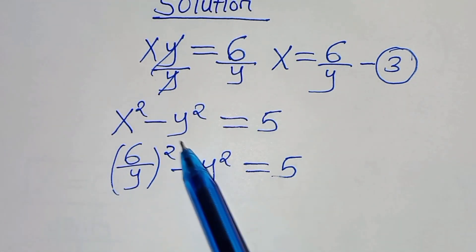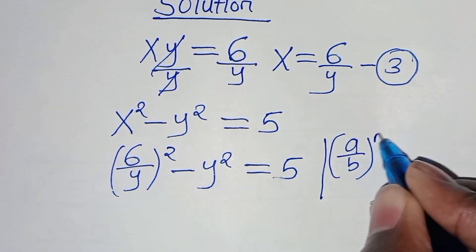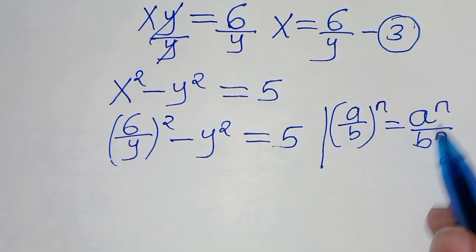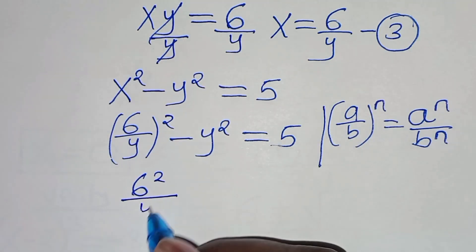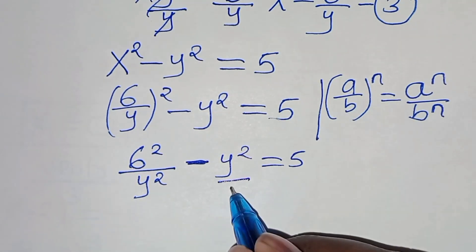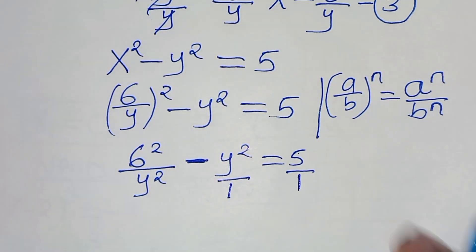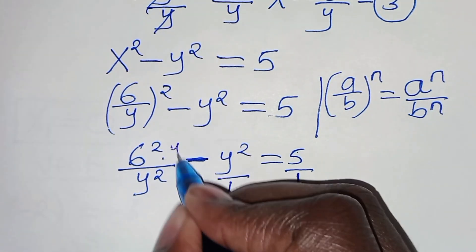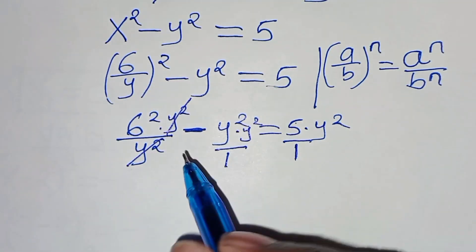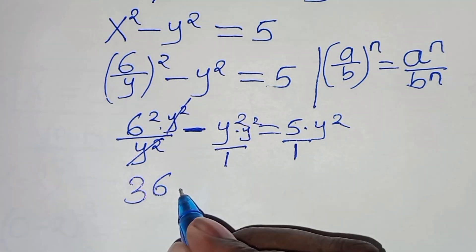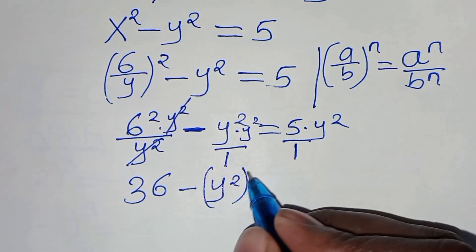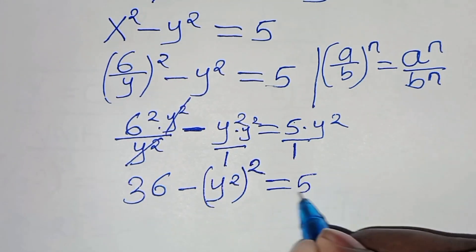Since 6 over y is in the form a over b raised to the power of n, we can express it as a to the power of n over b to the power of n. Applying this exponent property, we have 36 over y squared minus y squared equals 5. Since y squared is over 1 and 5 is over 1, the LCD is y squared, so let's multiply both sides by y squared. The y squared terms simplify, giving us 36 minus y squared to the power of 2 equals 5y squared.